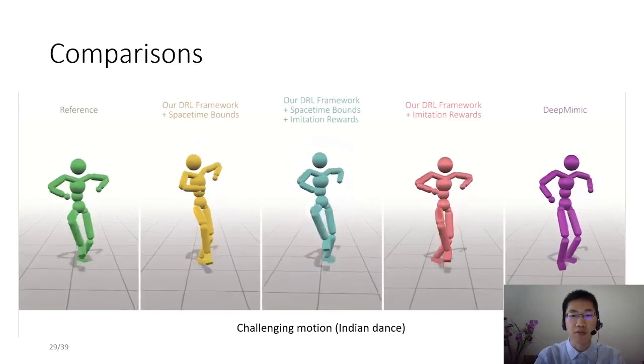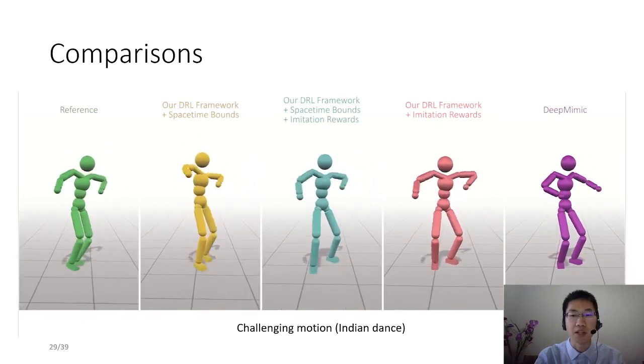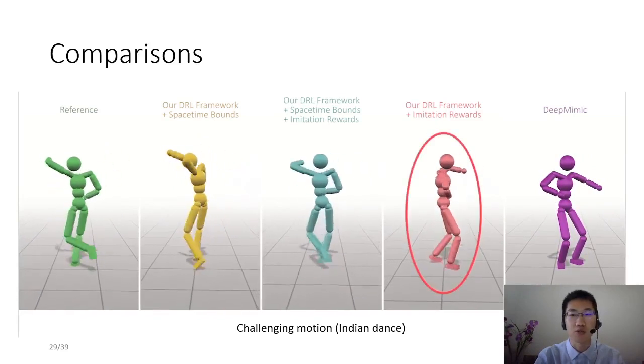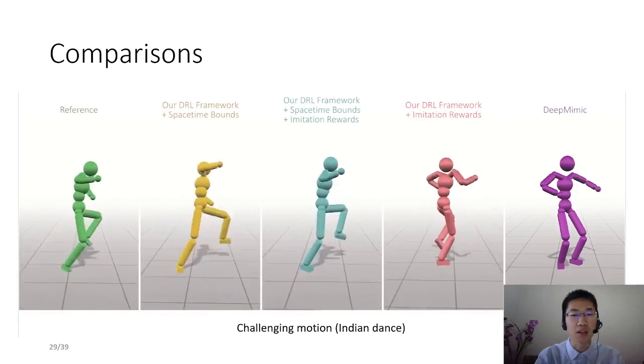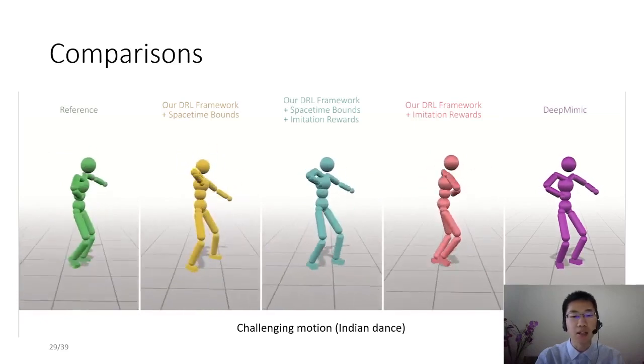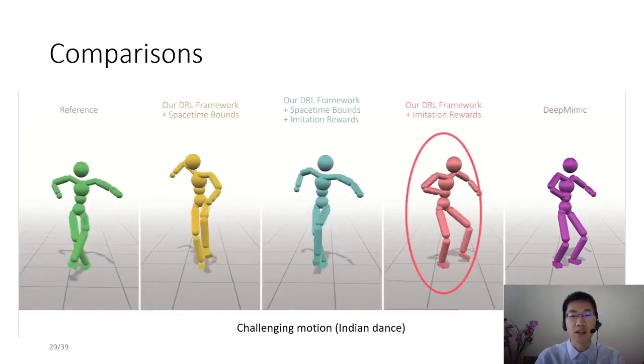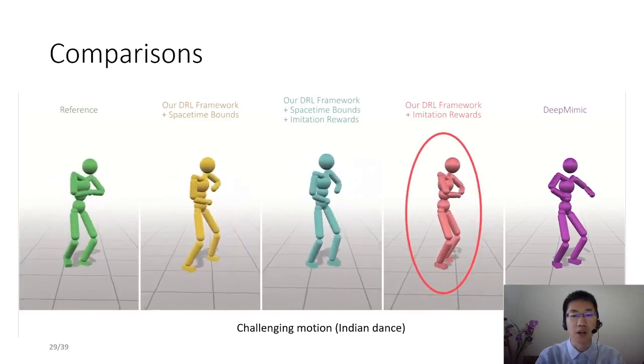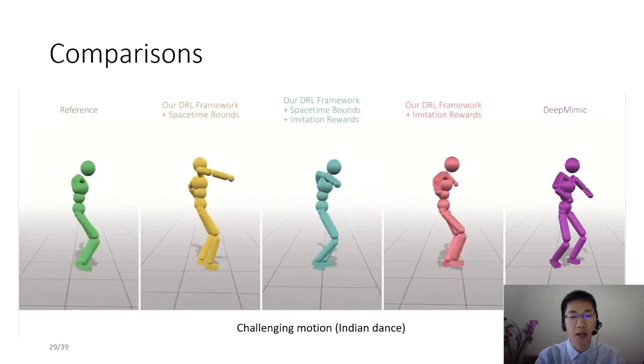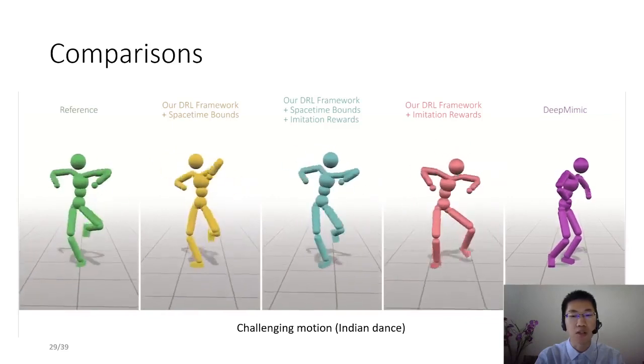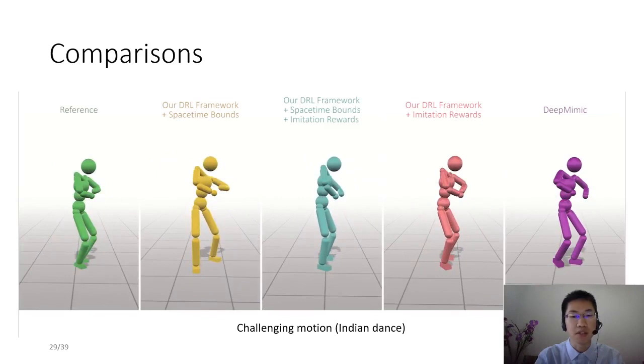First, for challenging motions, the tracking-based DRL system tends to sacrifice tracking fidelity of those challenging motion segments in order to gain longer survival. In breakdance motion, there are several difficult turns where controllers trained by tracking-based methods tend to skip. But the controller trained through our spacetime bounds can reproduce this motion faithfully. It can succeed even without an imitation reward.